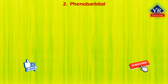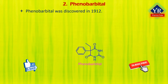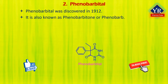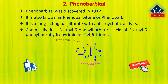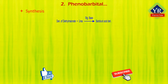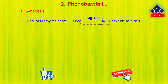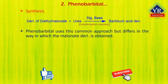The second drug is phenobarbital. Phenobarbital was discovered in 1912 and is the oldest still commonly used anti-seizure medication. It is a long-acting barbituric acid derivative with antiepileptic property, chemically known as 5-ethyl-5-phenyl barbituric acid or 5-ethyl-5-phenyl-hexahydropyrimidine-2,4,6-trione. Barbiturates are obtained via condensation reactions between a derivative of diethyl malonate and urea in the presence of a strong base. The synthesis of phenobarbital uses this common approach but differs in how the malonate derivative is obtained.